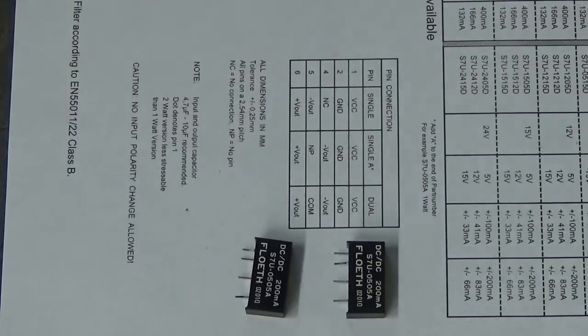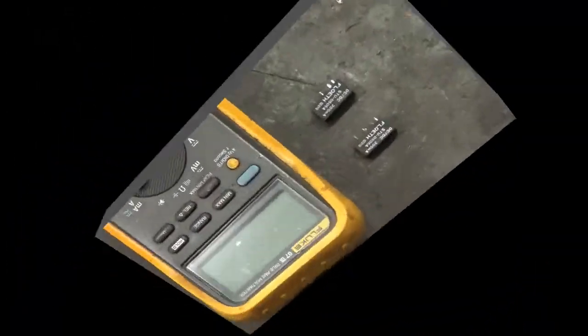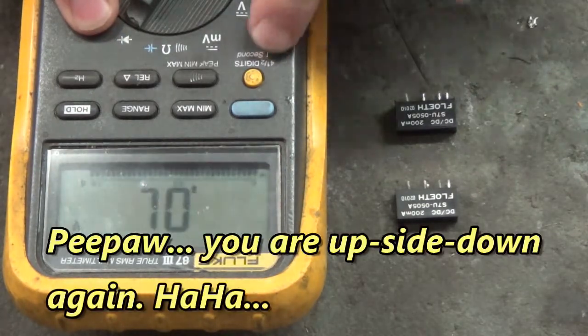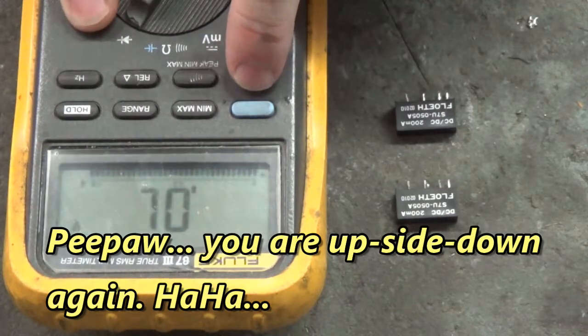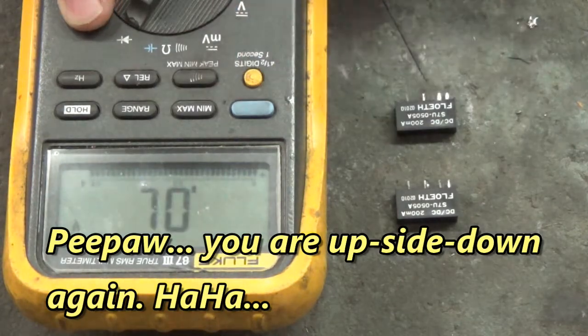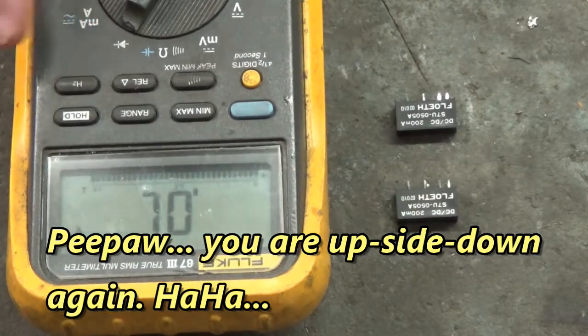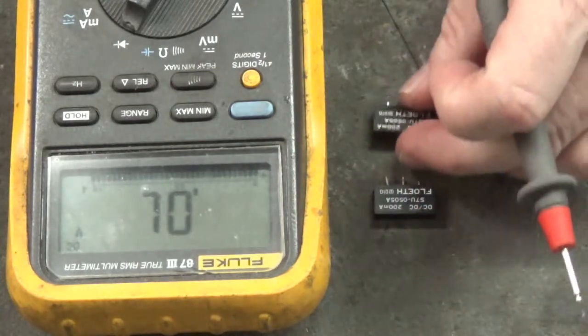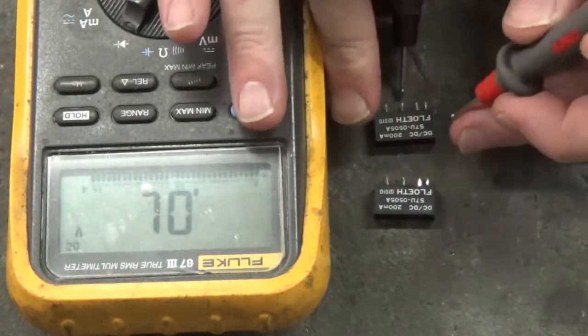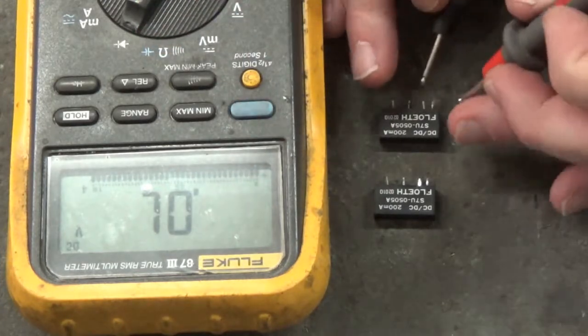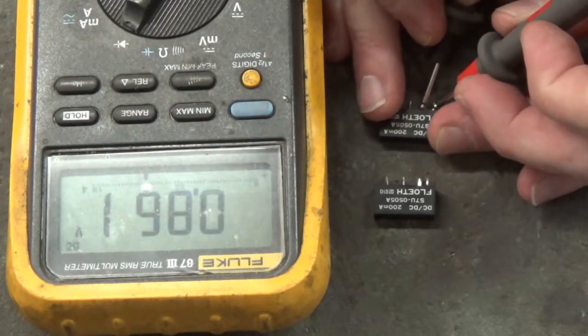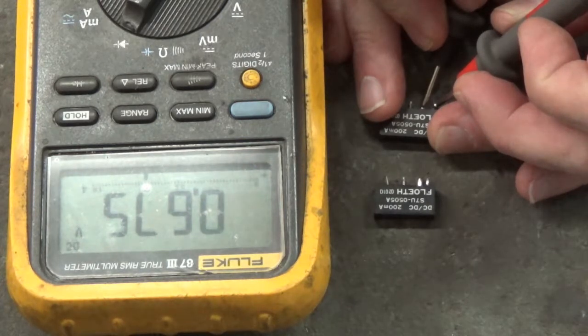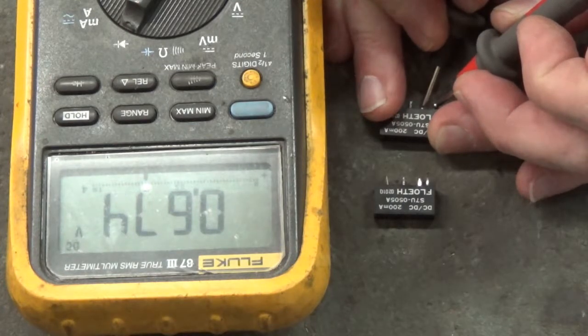Alright, we're back with the meter in diode test mode. Let's go across pins one and two. I've got the red lead on pin one and the black lead on pin two, and I've got a good diode drop, point six seven four.